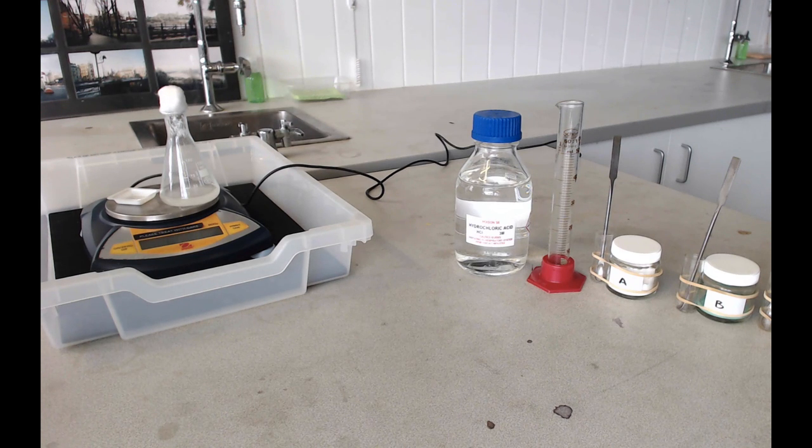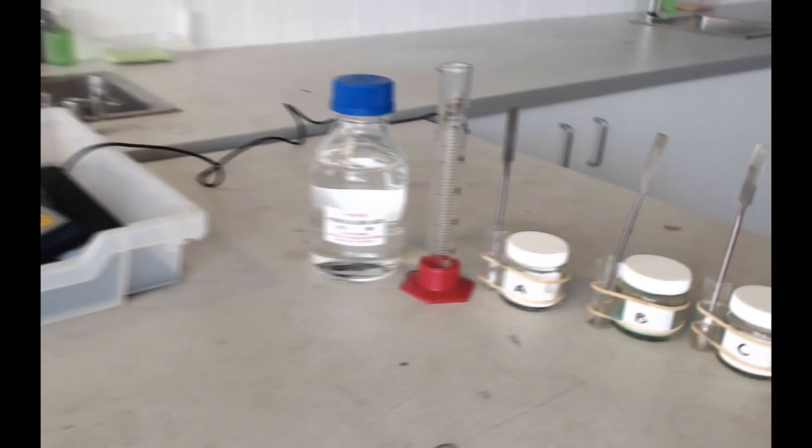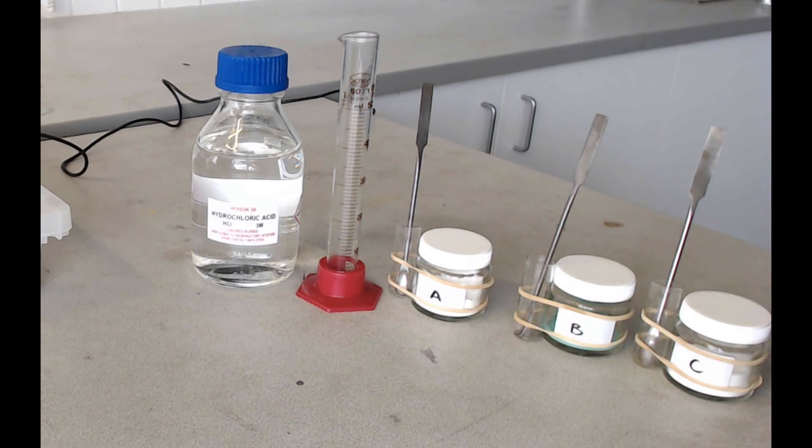Once you've carried out that procedure for one carbonate, you then just do it for the other two carbonates using a fresh 20 milliliters of acid each time. Everything that you've used today can just be poured down the sink.